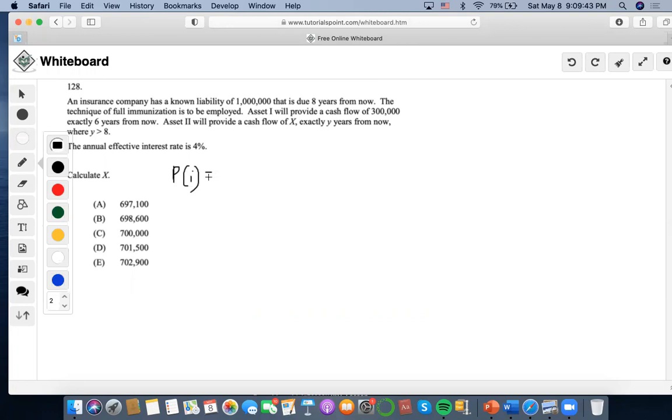So the first thing that we're going to do is that we're going to take 300,000, which is from asset one, and we're going to accumulate it towards the liability that we have here. So one thing is that we have to make these equations based on the comparison date of time eight where the liability occurs.